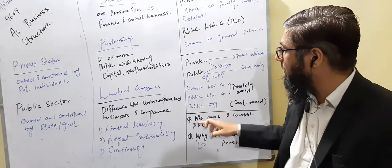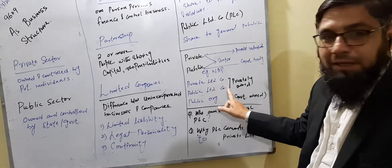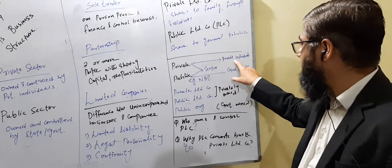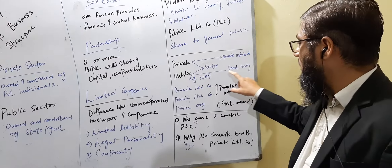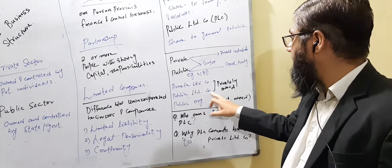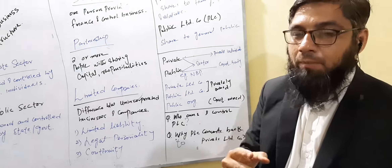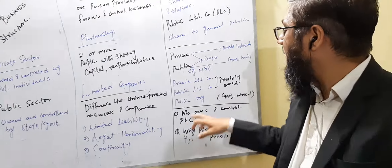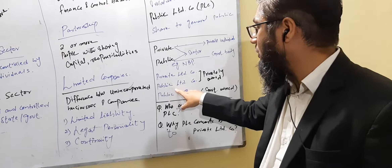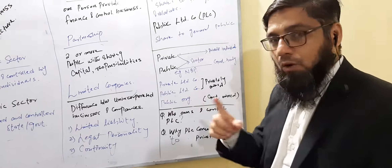Students get confused between these five terms: private sector business, public sector business, private limited company, public limited company, and public organization. To clarify: private sector means owned by private individuals, public sector means owned and controlled by a government body, private limited companies sell shares to family and friends, and public organizations are owned and controlled by the government. The word 'company' means a profitable organization, and profit is meant to be earned by private individuals, not by the government.